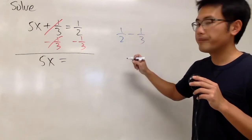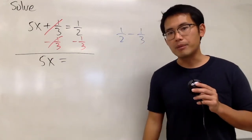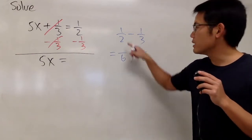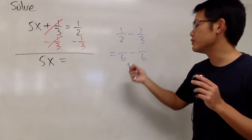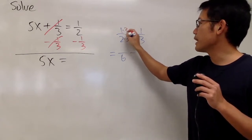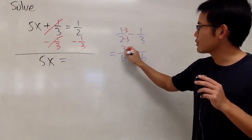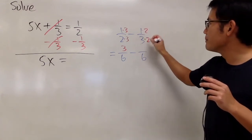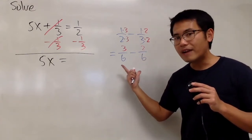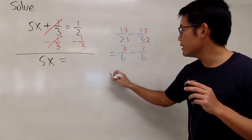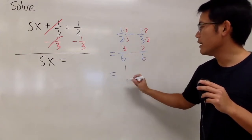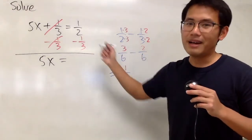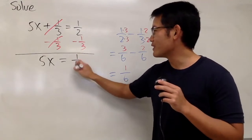1 over 2 minus 1 over 3. To subtract fractions, we need to have the common denominator. When we have 2 and 3, the common denominator is going to be 6. To get to 6 from 2, you ask yourself: 2 times what gives you 6? The answer is 3. So you multiply the bottom by 3 and also multiply the top by 3 — 1 times 3 gives us 3. For the second part, 3 times what gives you 6? The answer is 2. So you also multiply the top by 2 — 1 times 2 is 2. When they have the same denominator, you can subtract just the top: 3 minus 2 gives 1, and the denominator stays the same. So we have 1 over 6.